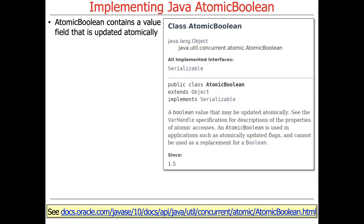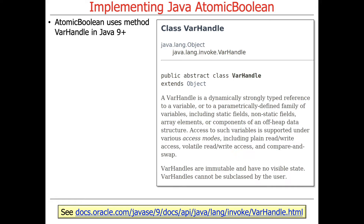As you might expect, if AtomicLong was a way of atomically doing operations on a long value, it should stand to reason that AtomicBoolean involves atomically updating a boolean value. This particular implementation is going to show what's available in Java 9 and beyond.